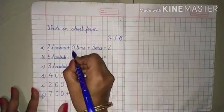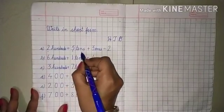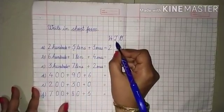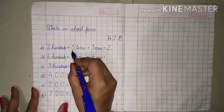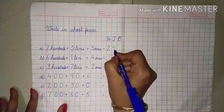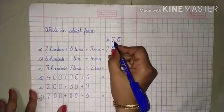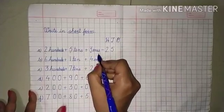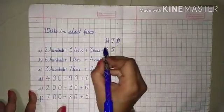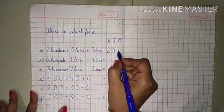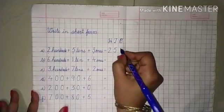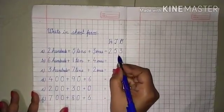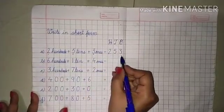Now the next number — five tens. T stands for tens, so tens is the place of five. We will write five here. Next, three ones. We will write three under O, which means ones. Three ones. So the expanded form gives us the short form: two hundred fifty-three.